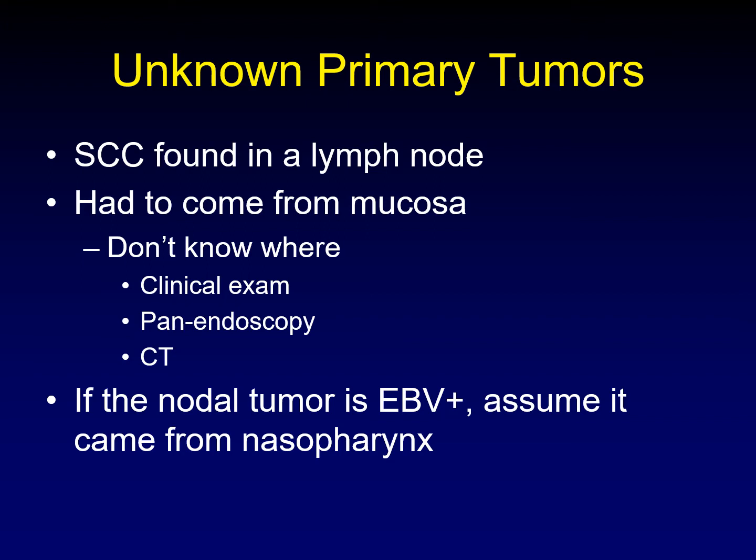If the disease in the node is positive for Epstein-Barr virus, we assume that the primary tumor came from the nasopharynx. This is how you get a T0 tumor — when you get an Epstein-Barr positive lymph node with no known primary tumor, that's what we call a T0 nasopharyngeal carcinoma.